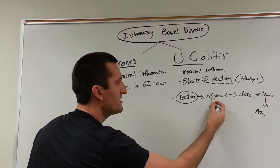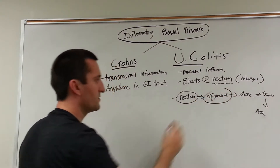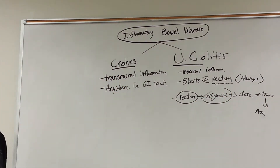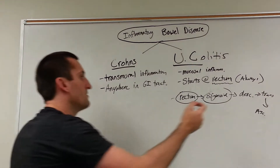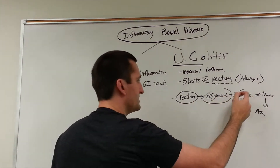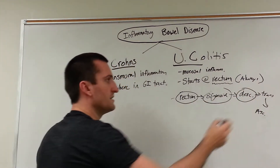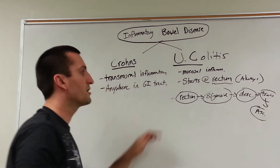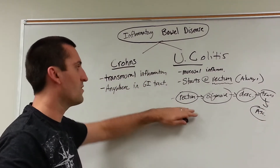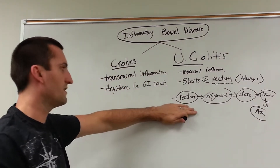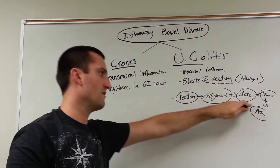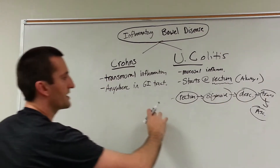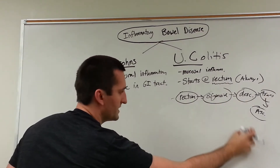It may then also involve the sigmoid — for example, a patient with rectosigmoid inflammation. You may also see it spread even more proximally. They're always going to involve the rectum and then involve the next segment, so we're going to have a continuous inflammation.